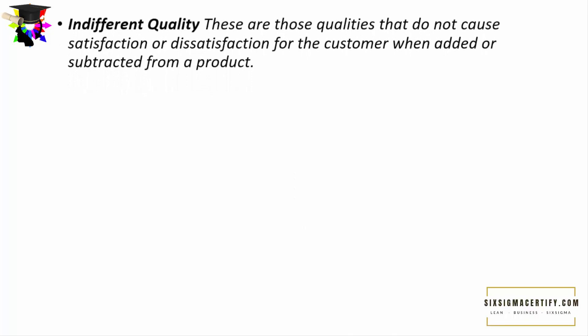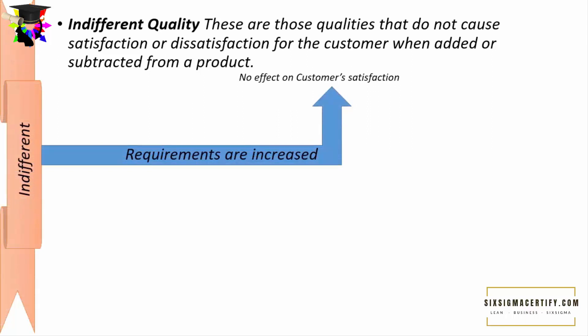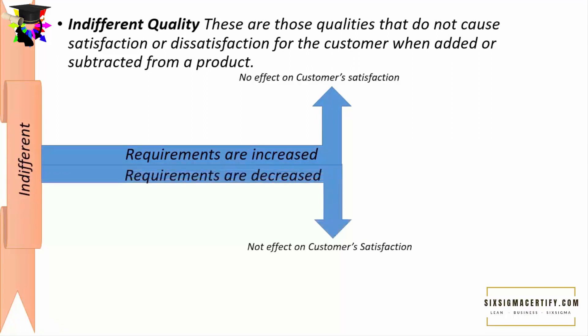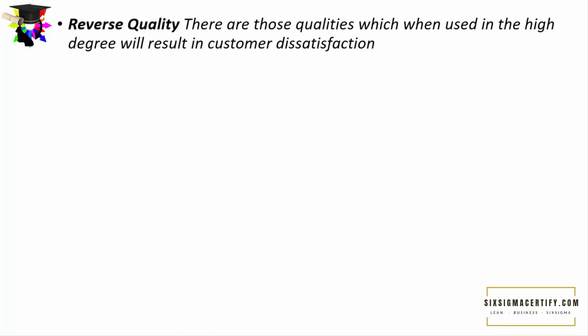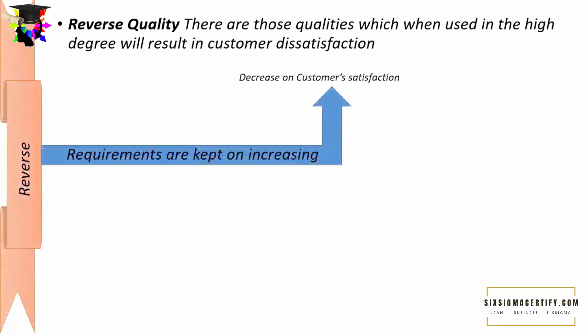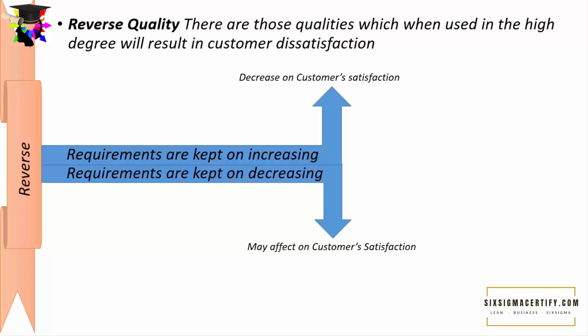Another is the indifferent quality — qualities that do not cause satisfaction or dissatisfaction for customers whether added or removed from products or services; there is no effect either way. The last one is reverse quality. These are qualities which, when used in high degree or amount, result in customer dissatisfaction. As requirements keep increasing, satisfaction decreases because customers don't want too many features. You should place these features in your products and services at the optimum level.